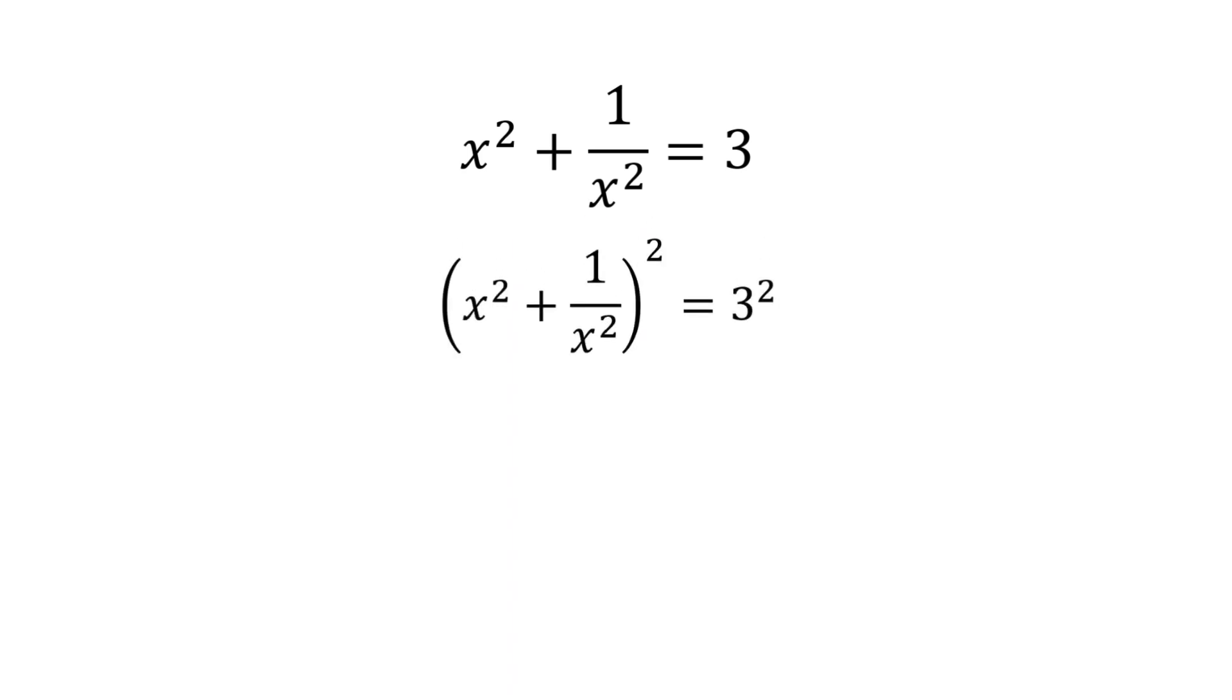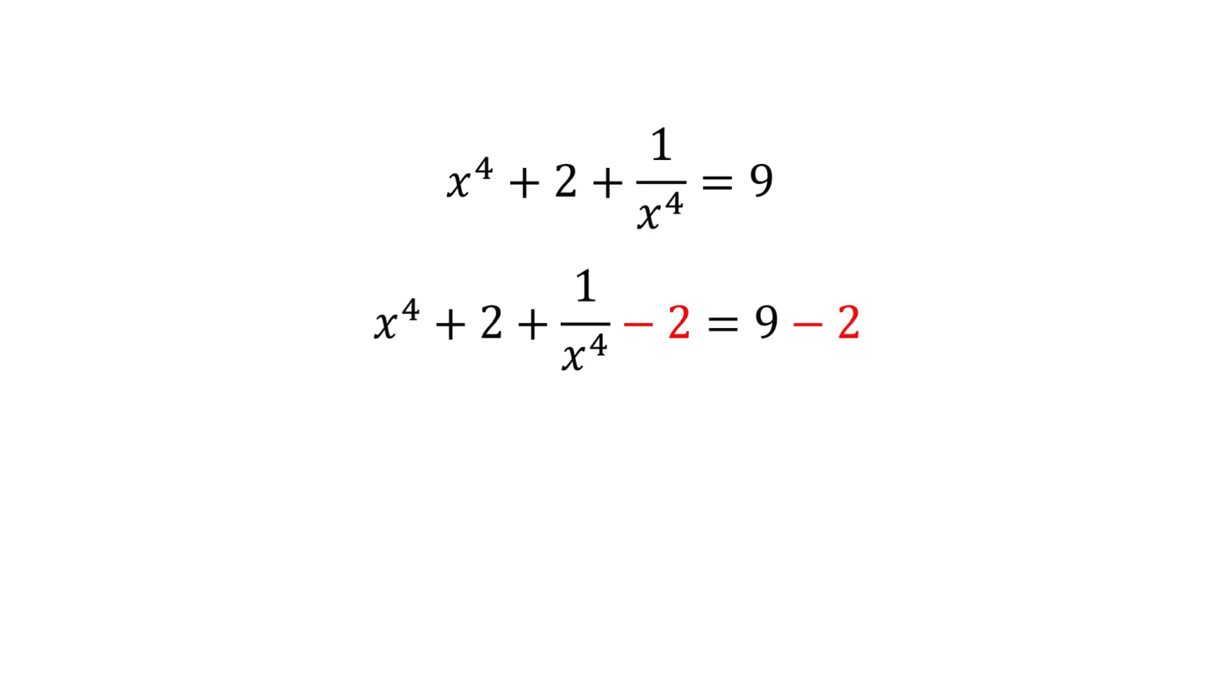This gives us x to the 4th, plus that same magic middle term that becomes 2, plus 1 over x to the 4th power. And on the other side, 3 squared is 9. We subtract that 2 from both sides. And boom, we're on the second rung. x to the 4th plus 1 over x to the 4th equals 7.